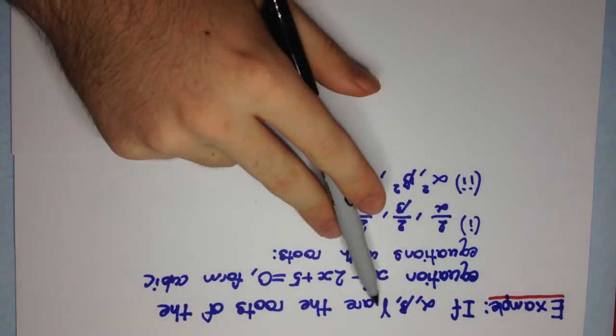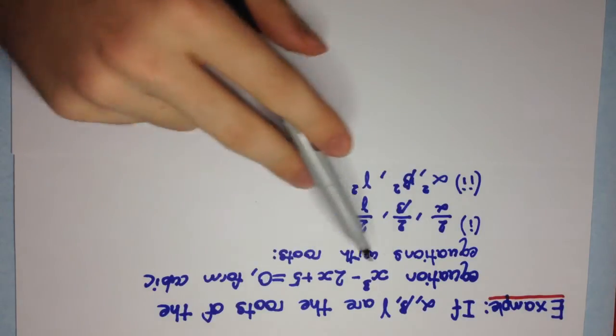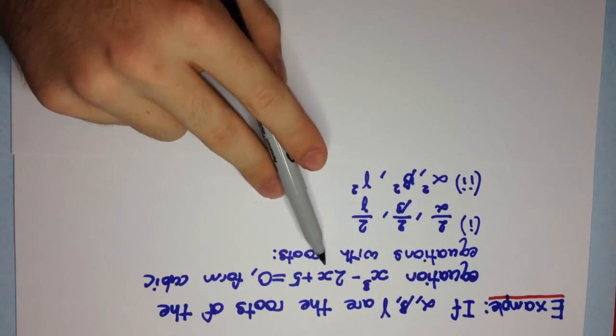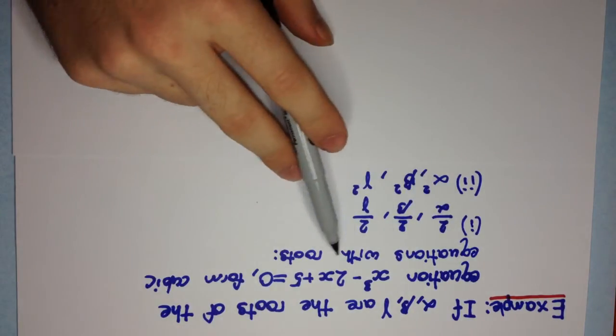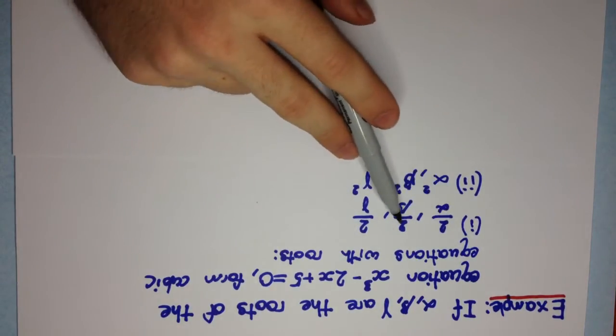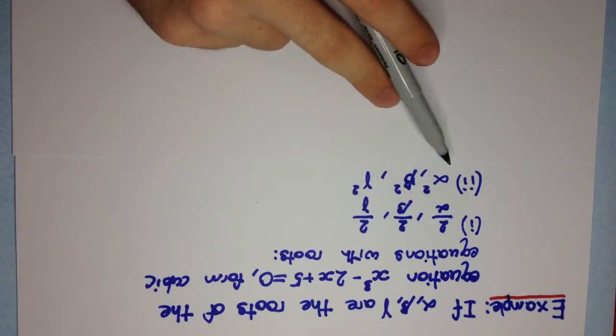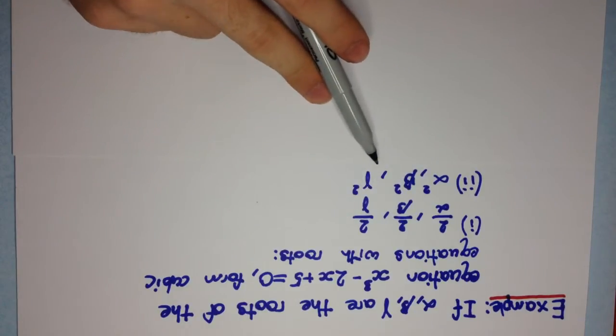The example is: if alpha, beta, and gamma are the roots of the equation x cubed minus 2x plus 5 equals 0, form cubic equations with roots 2 over alpha, 2 over beta, 2 over gamma, and alpha squared, beta squared, gamma squared.